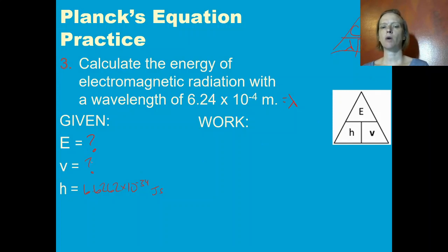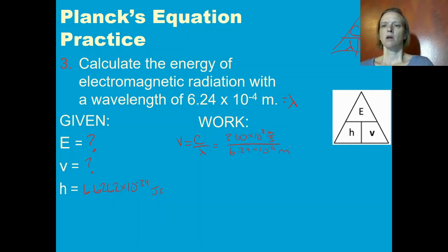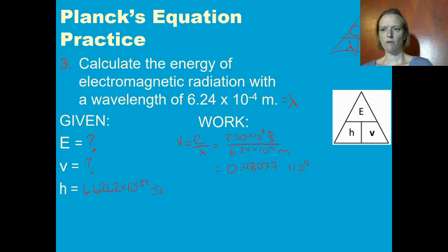Then I can use the frequency in E = hν. This is a two-step process. To calculate nu, I need to do the speed of light divided by the wavelength: 3.00 times 10 to the 8th meters per second divided by 6.24 times 10 to the negative 4 meters. When I do the math, I get 0.48077 times 10 to the 12th hertz.